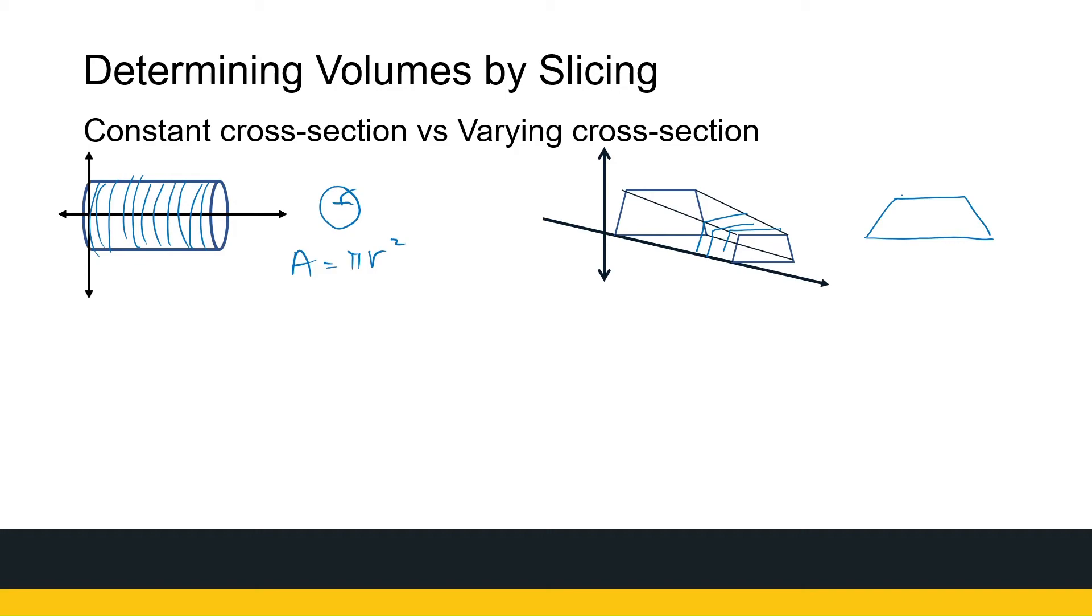Now with the constant cross-section, using what we had earlier, to find this area, we're just going to add together all the areas of the slices. So the volume of this whole thing is all the little bits added together. So the volume is the limit as n tends to infinity of the sum where i goes from 1 to n of the area of each one of those for xi. But now they're all the same, so it's πr² times delta x, because that's the width.